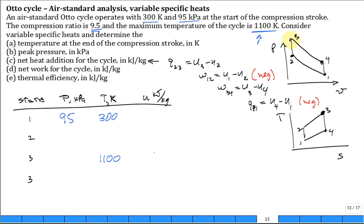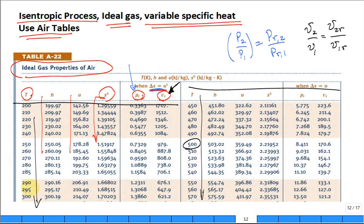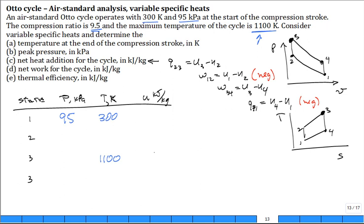How do I find U at 1? You just come to the table. It's 300, and I put in that value right there. You have to go to the tables to get U1. We have that 214.07. But how do I find T2, P2, U2?